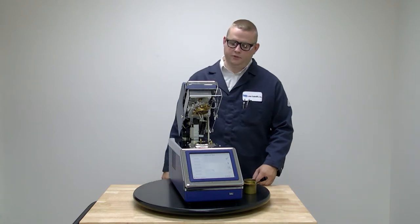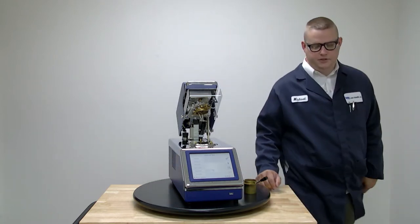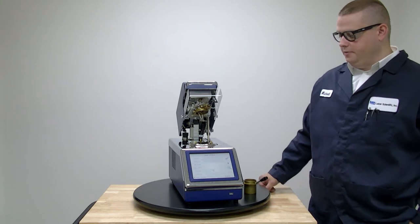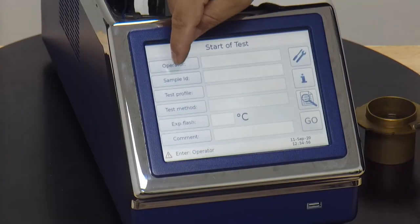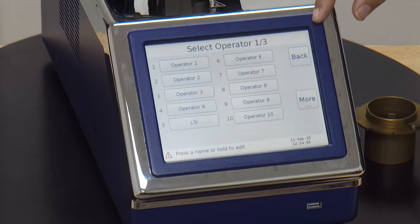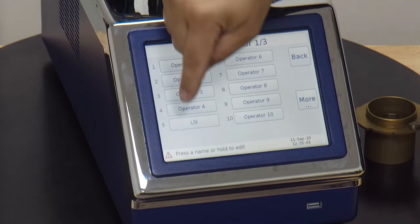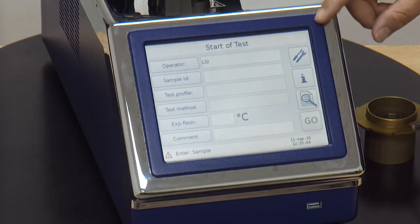Like any test on the Stanopceta Penske-Martin, we're going to work from the top of the screen down in order to get all our information in and run the test. First box is Operator. Here you can either type in a name or select from one of 30 pre-populated names. We already have LSI put in so we'll select that.